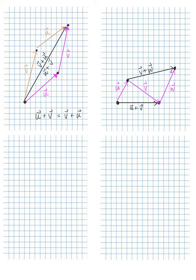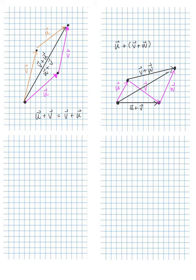Next, let's draw the vector U plus the quantity V plus W. Here's our U, and this is our V plus W. They're moving in the same direction, with the initial point of U touching the tail of V plus W. So U plus the quantity V plus W is this vector here.